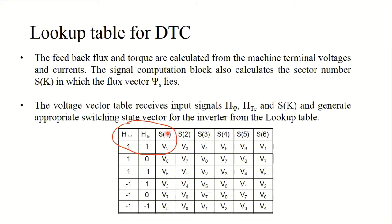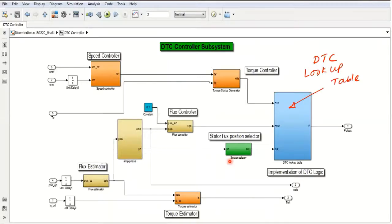This is the status signal which is input to the lookup table. In our simulation, this is the whole lookup table. I would like to show the first element, circled in red: Hsi equals 1, HT equals 1, and sector 1 — if the stator flux vector is in sector 1 then V2 is the switching vector to be selected. I will show in this simulation how I have achieved this. It is not possible to show all states in this video, so I have demonstrated one; similarly you can implement the others.